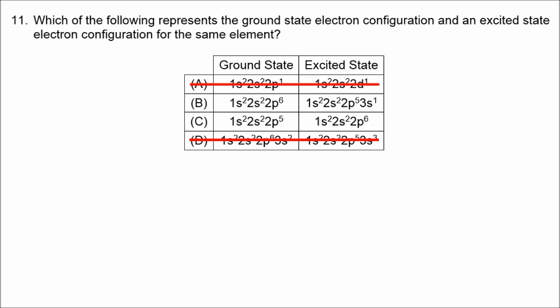The problem with choice C is that if I have a total of 9 electrons — 1S2, 2S2, 2P5 — that would be fluorine. Then going to 1S2, 2S2, 2P6 would be neon — an extra electron, so it's not the same element. The correct answer is B.